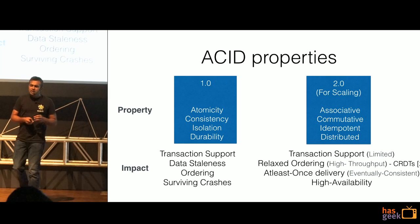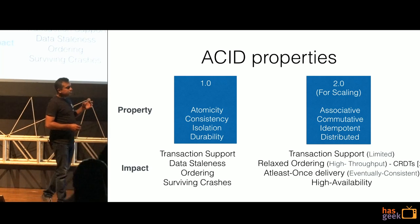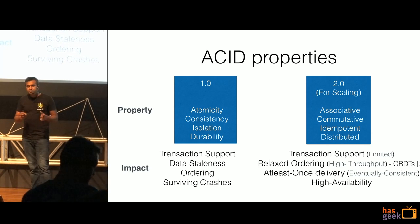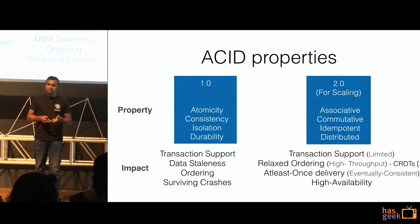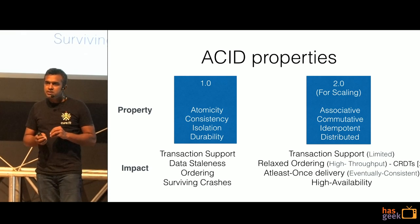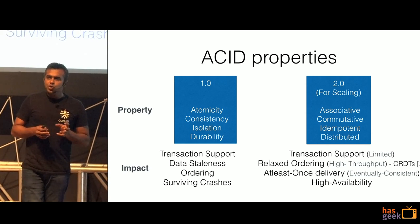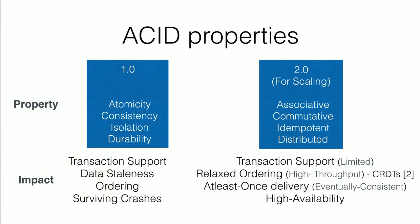The next one is ACID properties — let's look at ACID 1.0. Atomicity can be roughly translated into transaction support. Consistency would talk about ordering — whether you're going to be across replicas, whether it's eventually consistent or strongly consistent. Data staleness, and also durability — how durable is the data and can it survive crashes? So when someone says ACID 1.0 compliant, you can expect these specific properties from your data store.